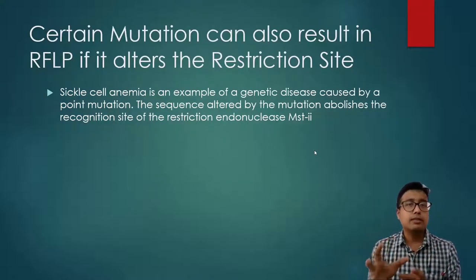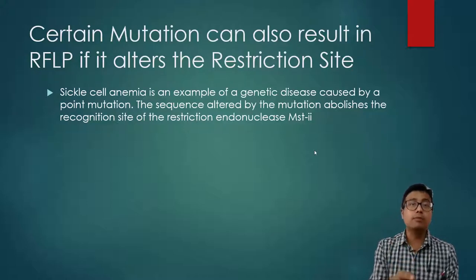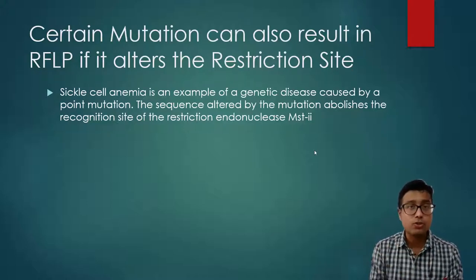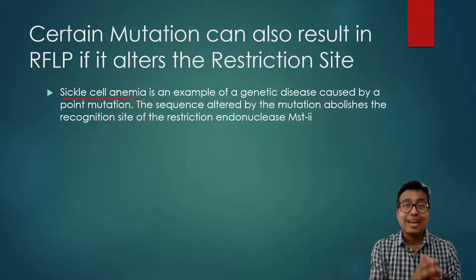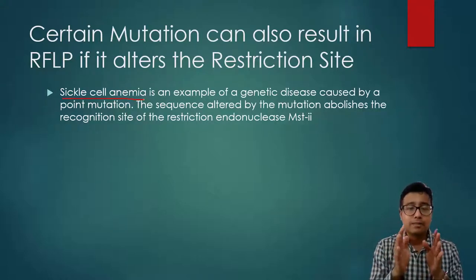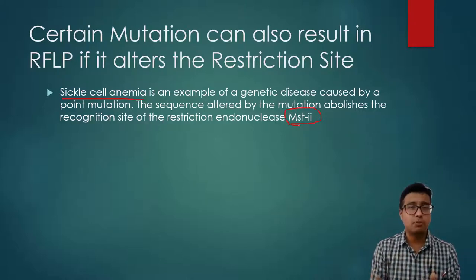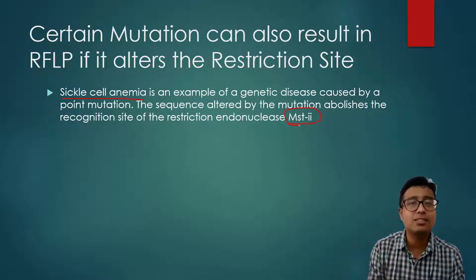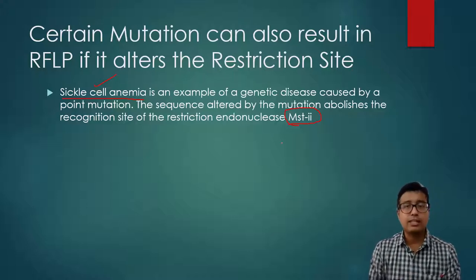You may be asked for an example of a mutation that changes a restriction site. The one example you should always mention is sickle cell anemia. The point mutation — glutamic acid to valine — leads to the inability of the restriction endonuclease MST2 to identify the restriction site, thereby abolishing it, and this leads to the various problems associated with sickling.